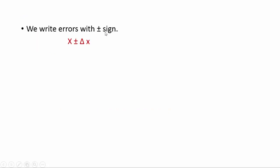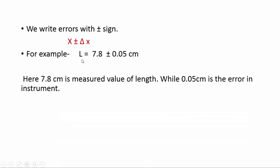We write errors with positive and negative signs. X ± ΔX. For example, the length of a rod can be written like this: L = 7.8 ± 0.05 cm. Here 7.8 cm is the measured value of length and 0.05 cm is the error in instrument.